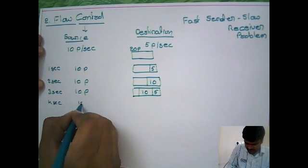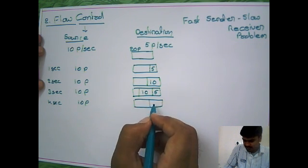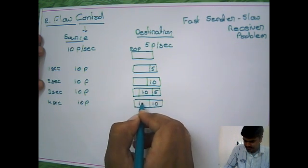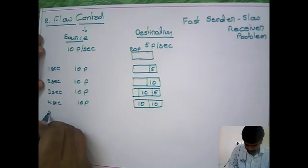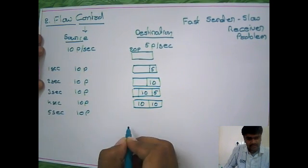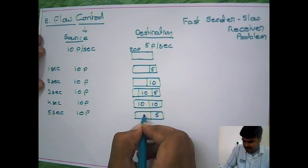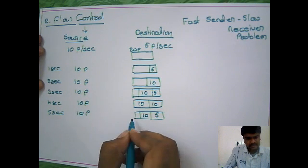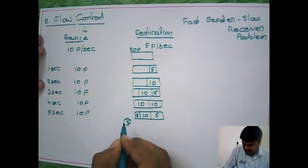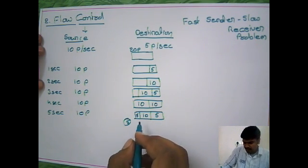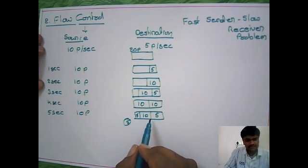This continues — 10 packets are sent each second, 5 are processed, and 10 go into the buffer. Up to a certain point there is no problem, but eventually — say by the 5th second — the buffer is full. When 10 more packets arrive, only 5 can be stored; the remaining 5 are simply discarded. After a certain amount of time, all packets sent by the source will be discarded.